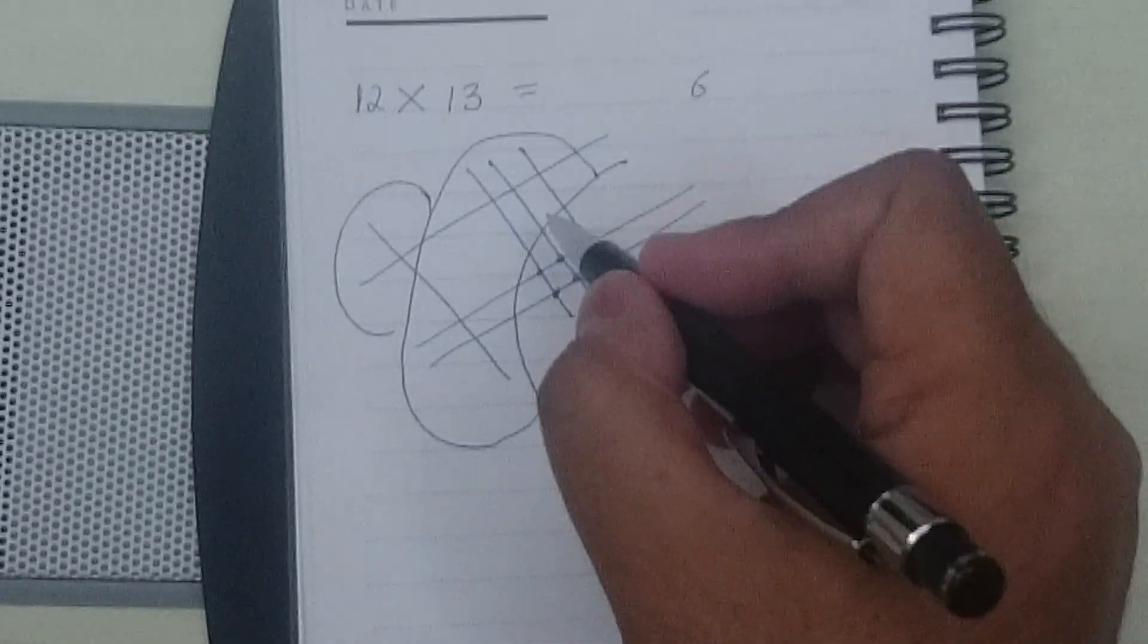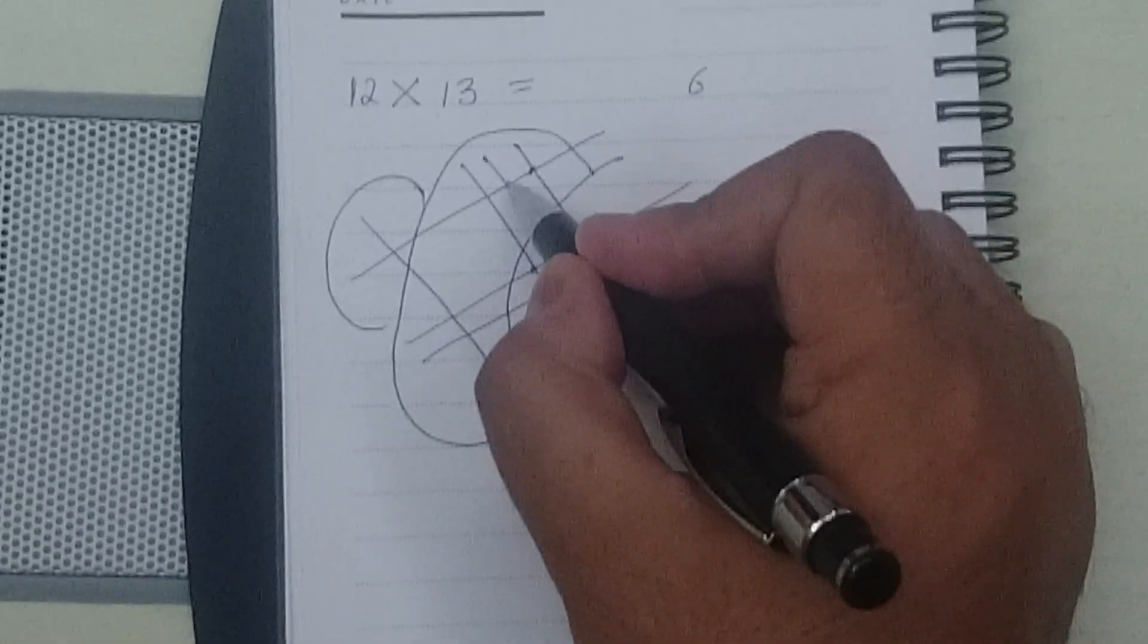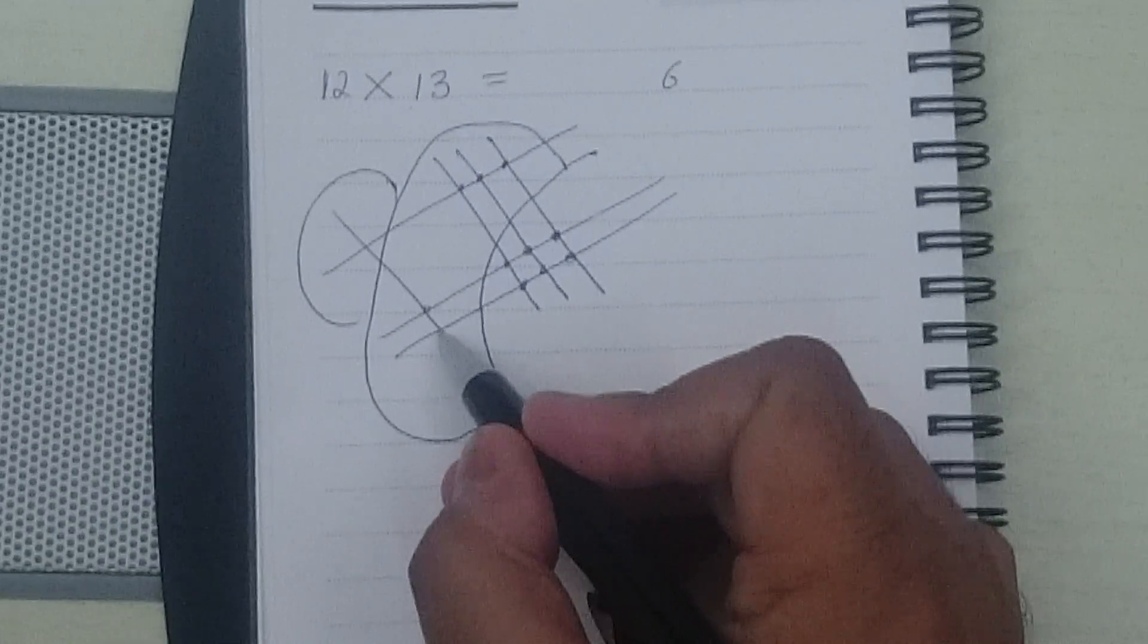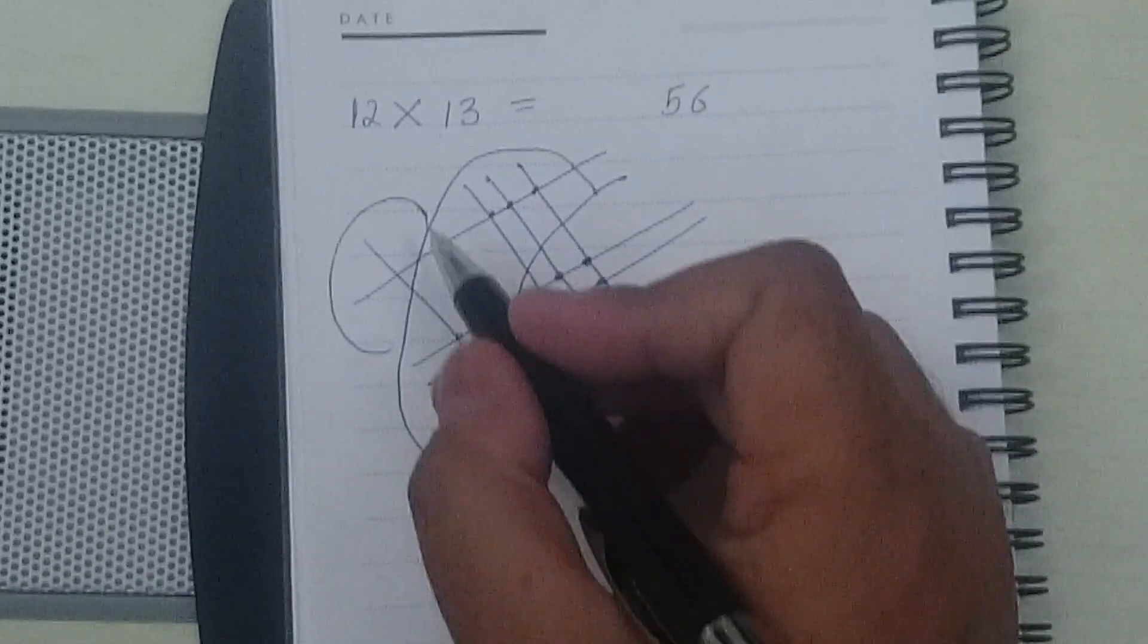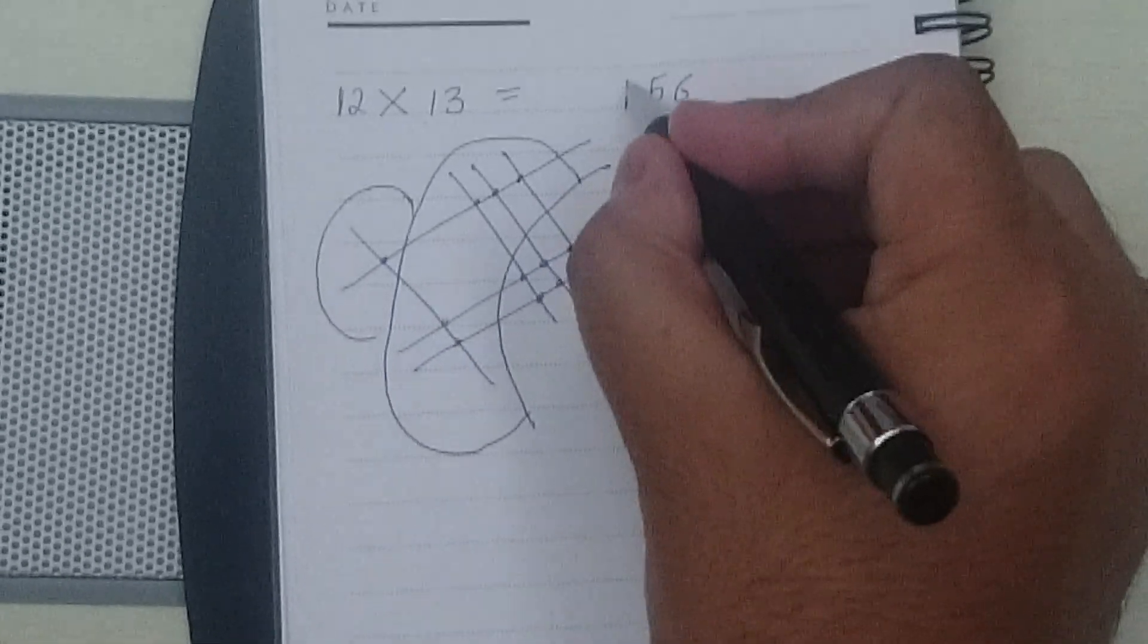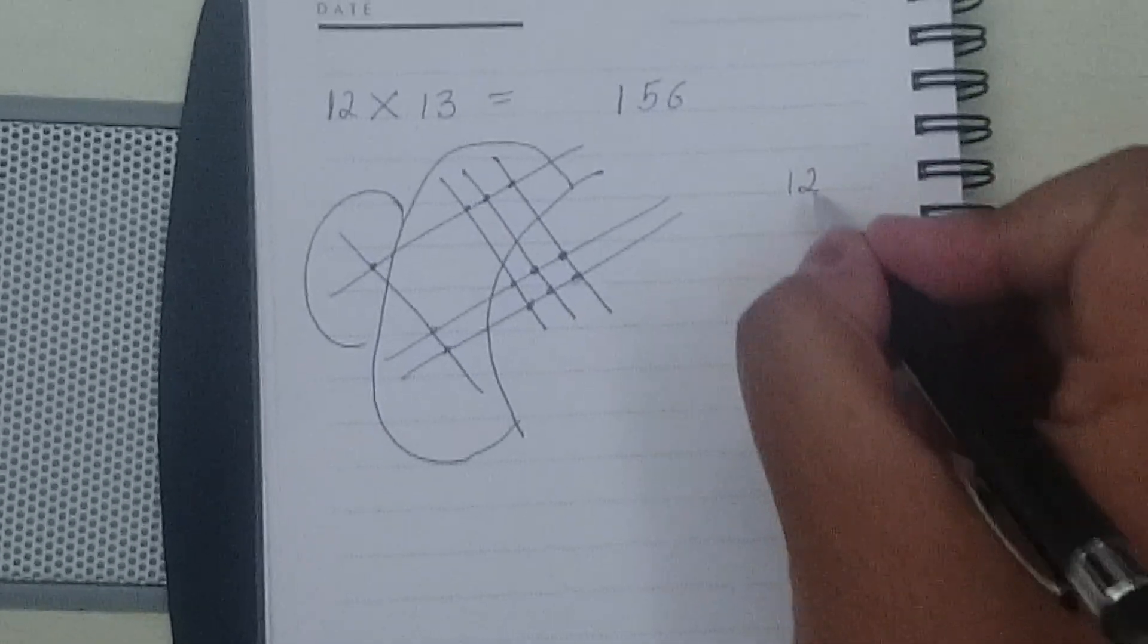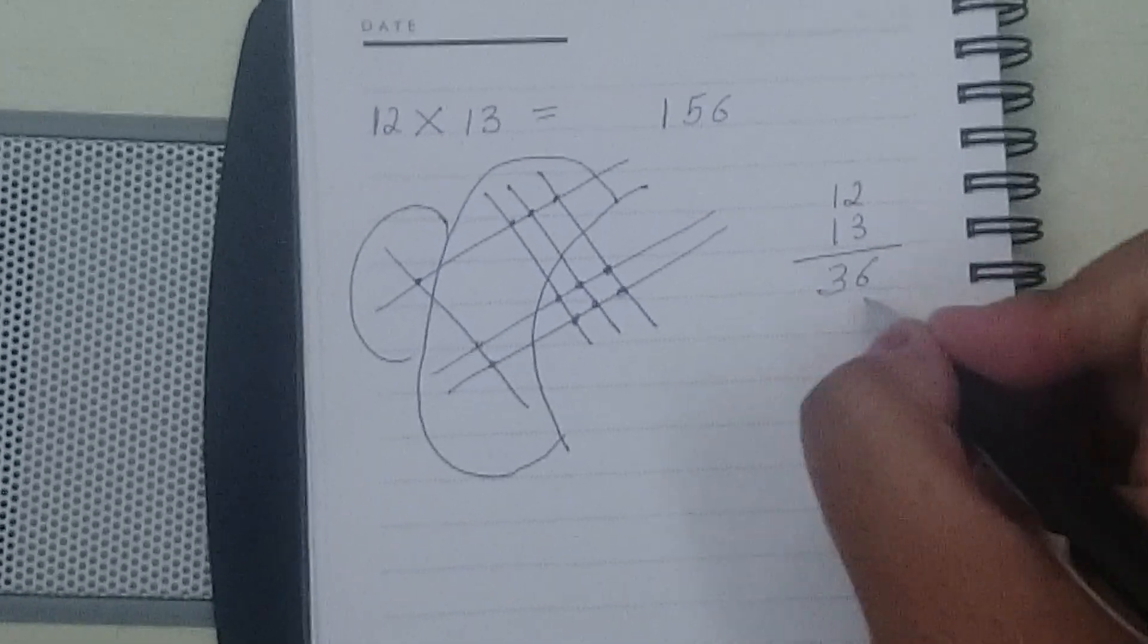In the second section, the number of intersections are 1, 2, 3, 4, 5. So the second digit is 5 and in the third section, the intersection is 1. So that is your answer. You can try checking it by the normal method of multiplication and the number comes out to be exactly the same.